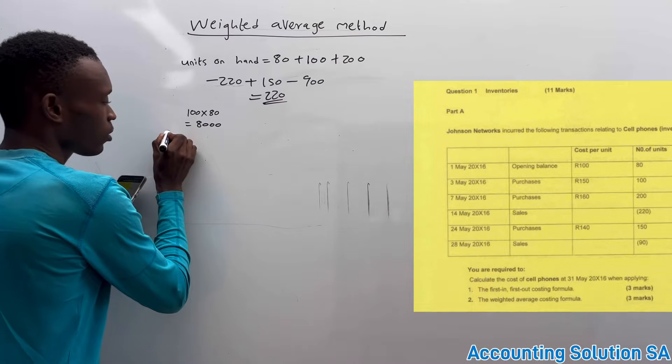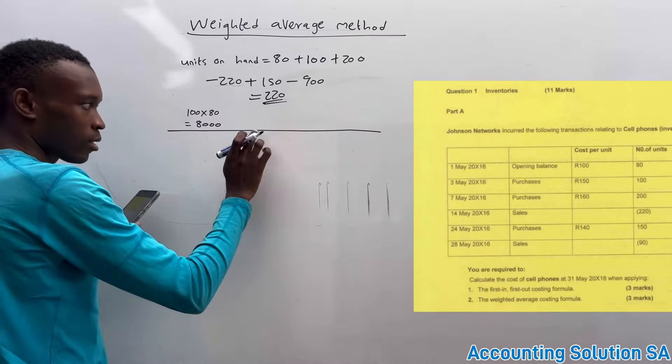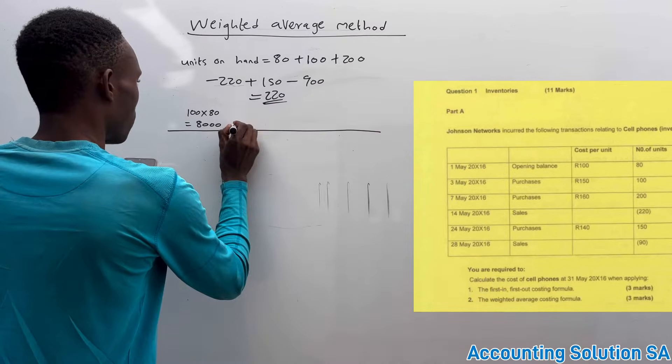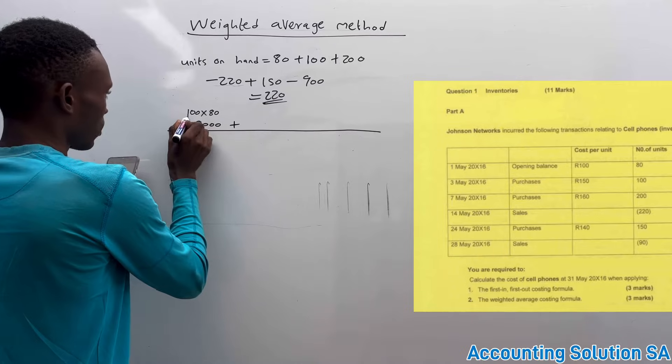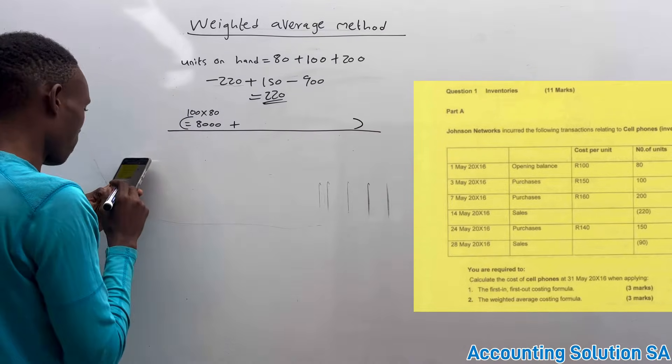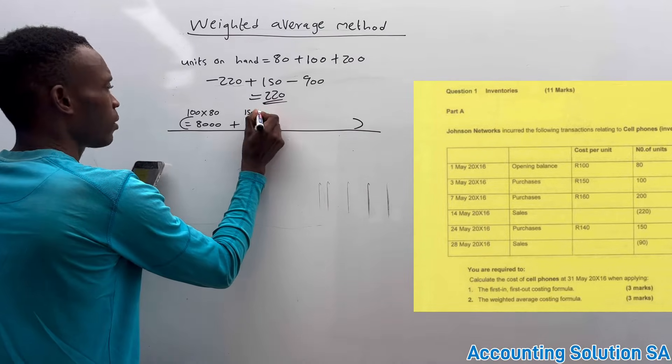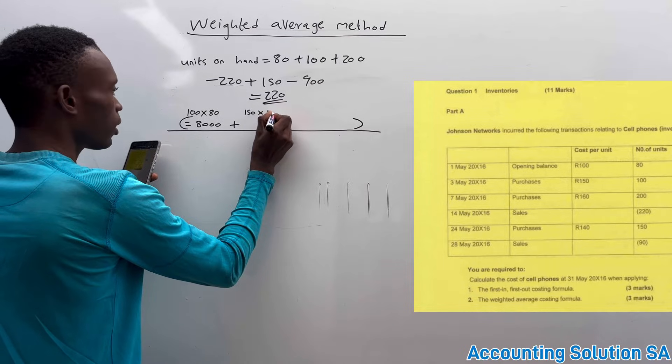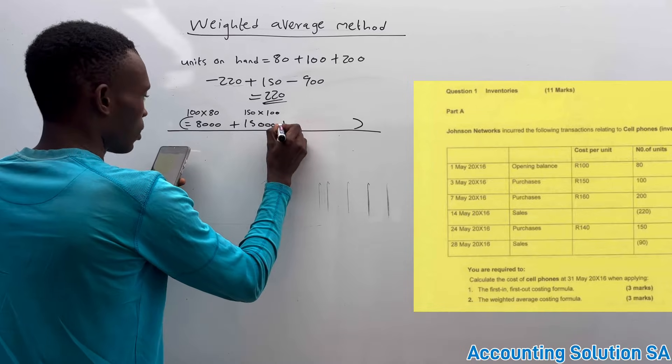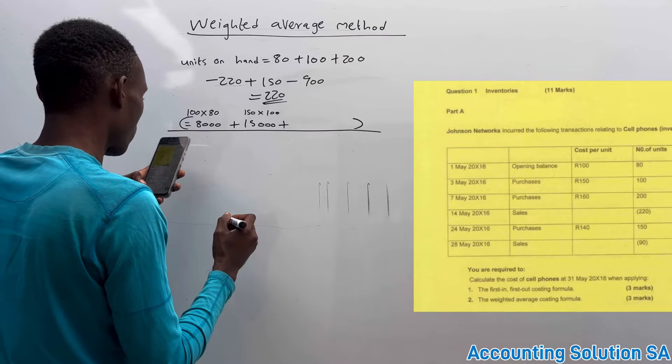On the bottom, you need to put a total figure, then you divide by units. 8,000 plus—I will just put a calculation on top—8,000 plus another purchase is 150. 150 multiply by 100, then it's gonna give us 15,000. Plus another one that we purchase is 200.